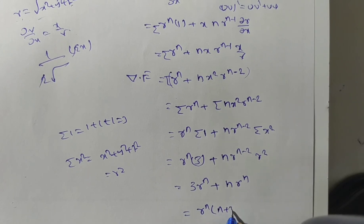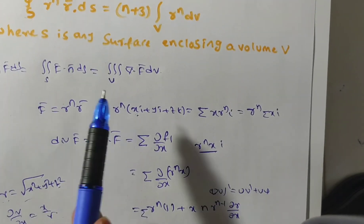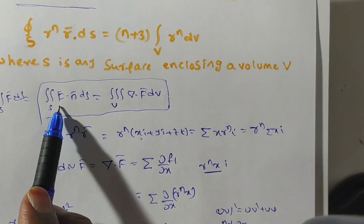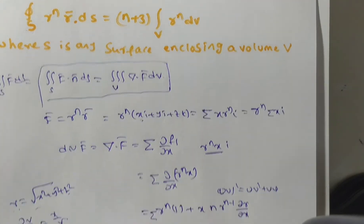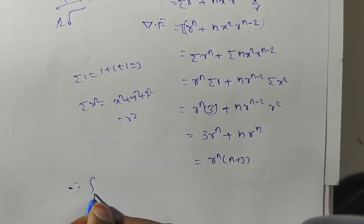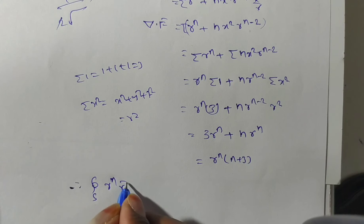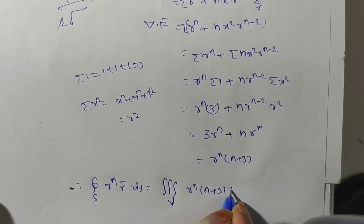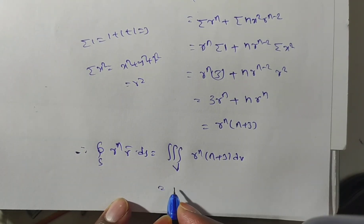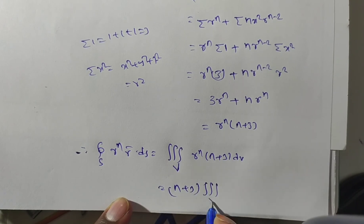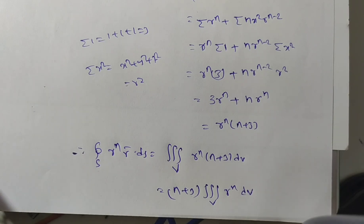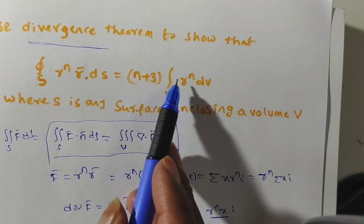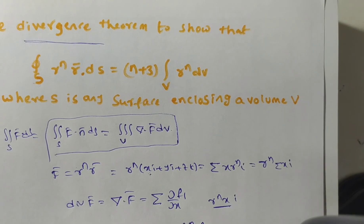Taking r^n common: del · f̄ = (n + 3) · r^n. Now substituting into the Gauss Divergence Theorem, with f̄ = r^n · r̄, we get: ∮_S r^n · r̄ · dS = ∭_V (n+3) · r^n dV = (n+3) · ∭_V r^n dV. This is exactly what we needed to prove. Thank you for watching.